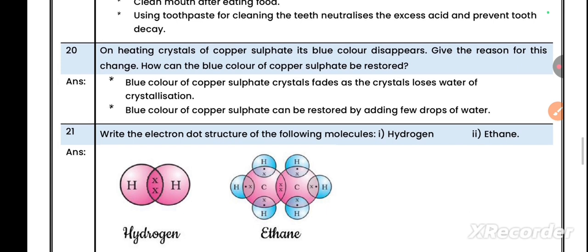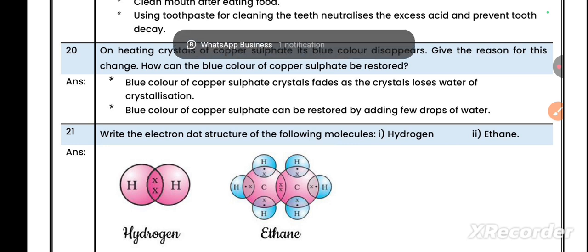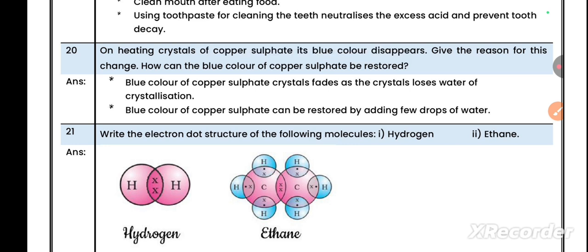Question number 20: On heating crystals of copper sulphate, its blue color disappears. Give the reason for this change. How can the blue color of copper sulphate be restored? Blue color of the copper sulphate crystals fades as the crystal loses water of crystallization. Blue color can be restored by adding a few drops of water.